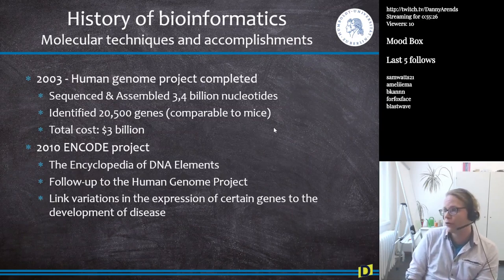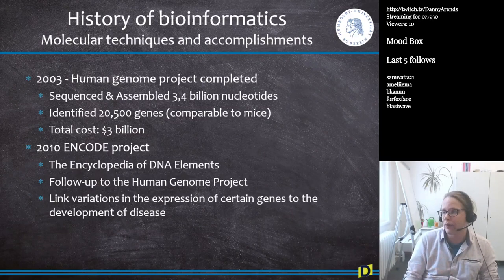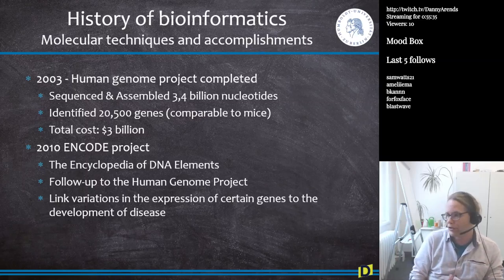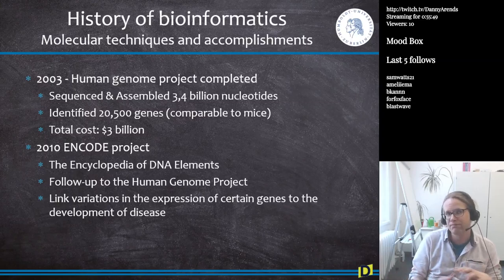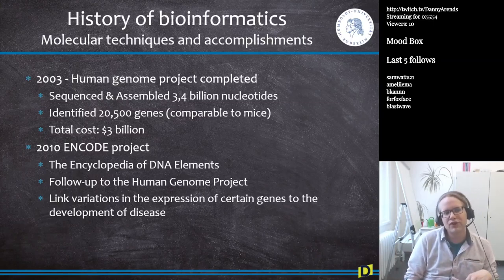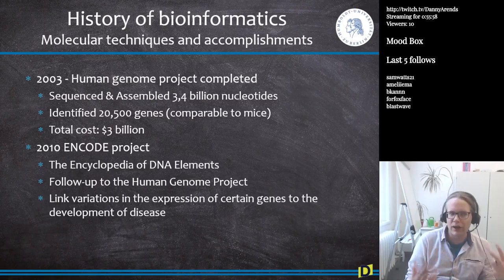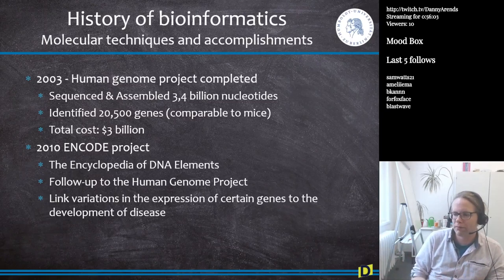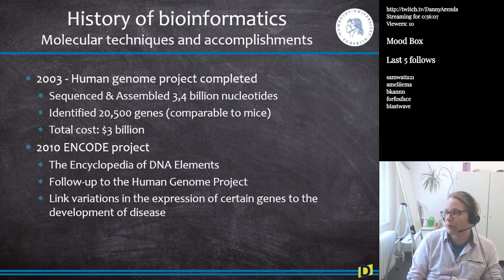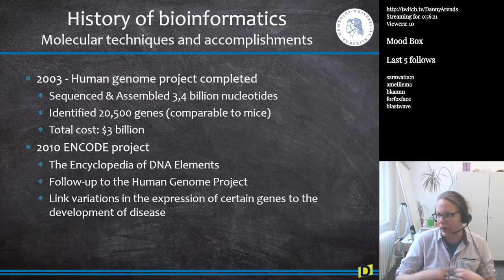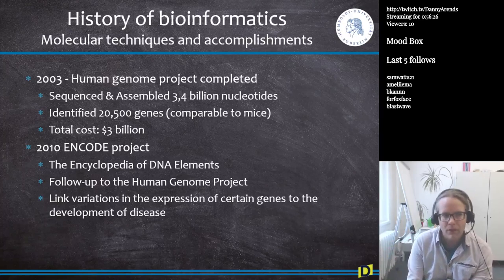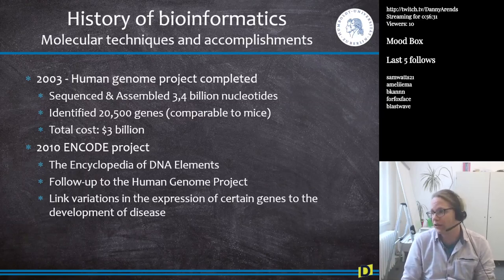In 2003, the Human Genome Project completed the sequencing and assembly of 3.4 billion nucleotides of the human genome. Around 20,500 genes were identified — very comparable to mice. The total cost was around 3 billion dollars. The project started as a collaboration between universities worldwide, but the Celera company actually finished much earlier using whole genome shotgun technology — just fragmenting everything, throwing it into a sequencer, and reassembling later.